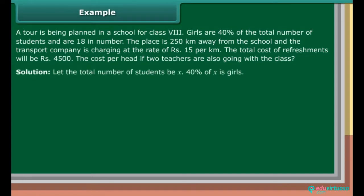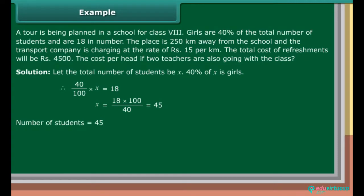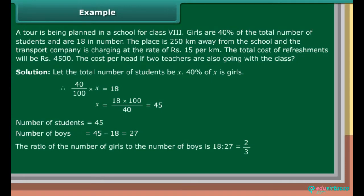Solution: Let the total number of students be X. 40% of X is girls. Therefore, 40 upon 100 into X is equal to 18. X is equal to 18 into 100 upon 40, which equals 45. Number of students is equal to 45. Number of boys is equal to 45 minus 18, which is 27. The ratio of the number of girls to the number of boys is 18 is to 27, which is equal to 2 upon 3.